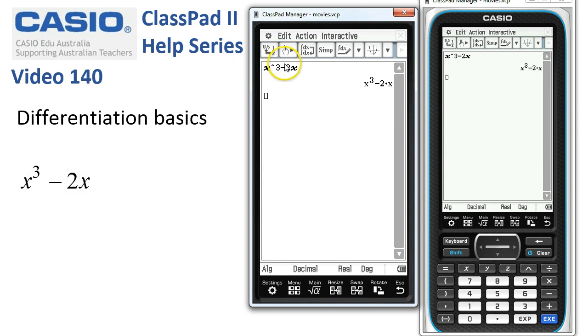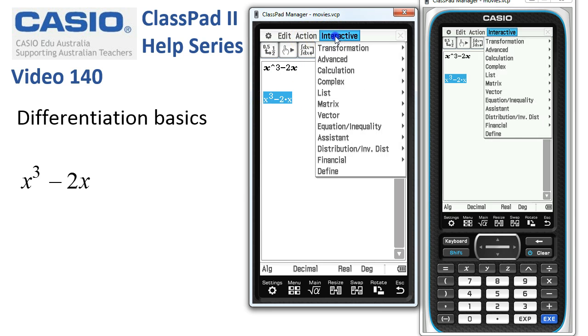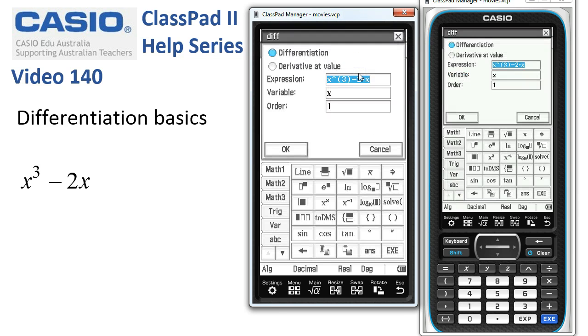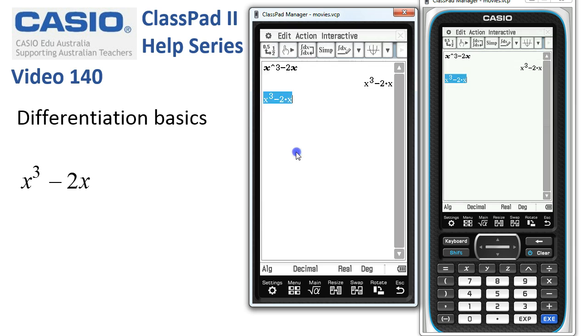I've already got a copy of it typed in. I'm going to drag it onto a new line, select it, and head off to the interactive calculation and differentiation tool. When we release the mouse, you can see it wants to differentiate our expression with respect to x and do the first order. If we tap OK, which is basically the default behavior we want nine times out of ten, ClassPad simply differentiates the function for us.